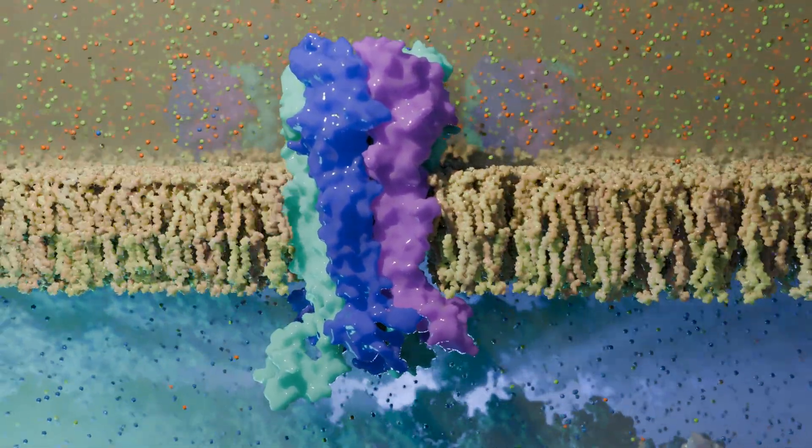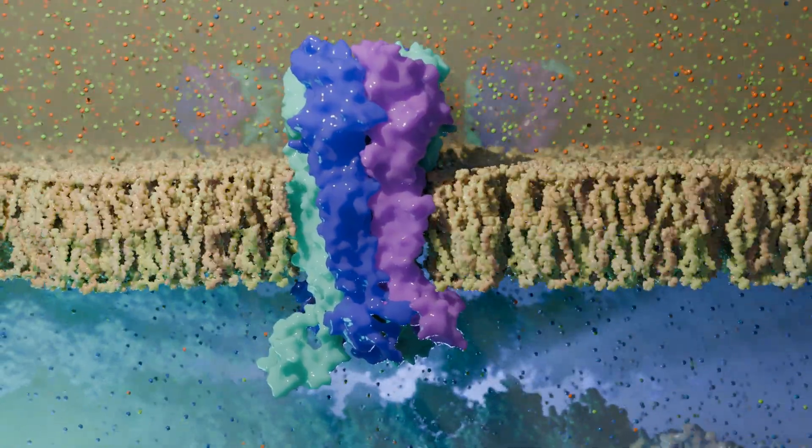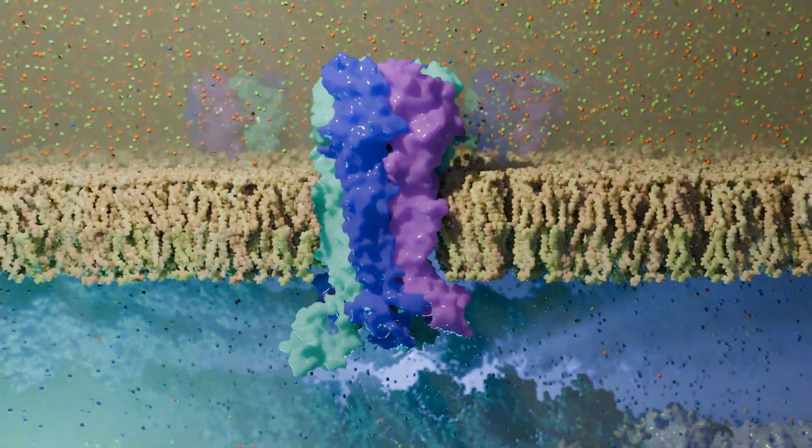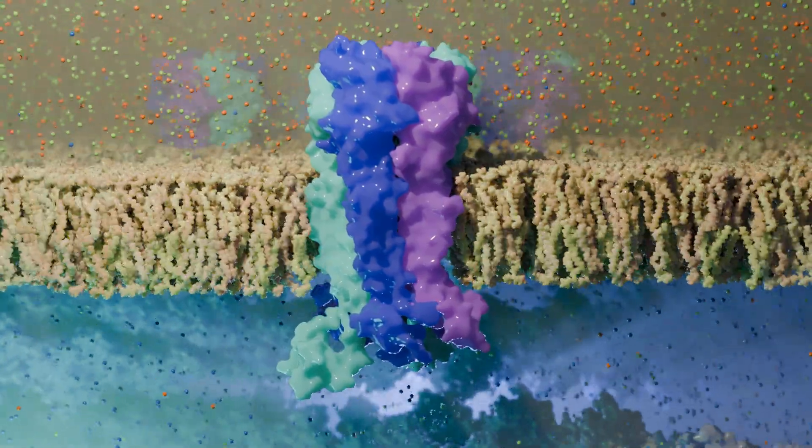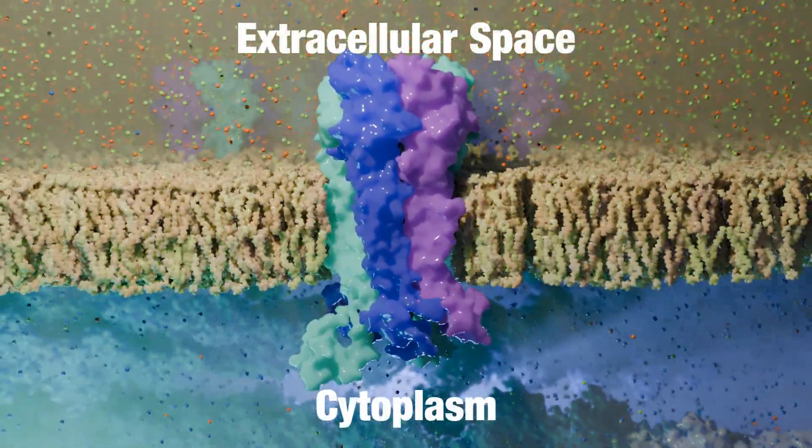The inhibition works by changing the membrane potential. The membrane potential is given by the difference of the ion concentration between the extracellular space and the cytoplasmic side.